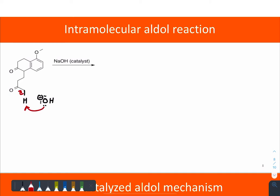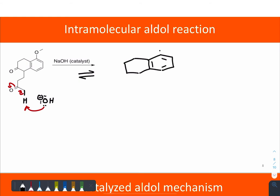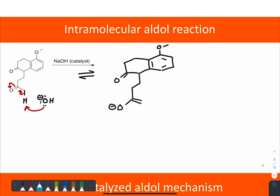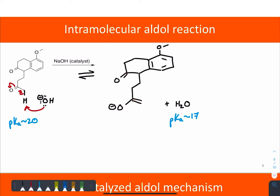So under basic conditions, we deprotonate at the kinetic position first. This is an equilibrium that favors the starting material. The pKa is about 20 versus a pKa of about 17, so the equilibrium does not favor the products, but still enough of the enolate can be generated. And as soon as it does, there's an electrophile close by and it can very quickly react with that electrophile.